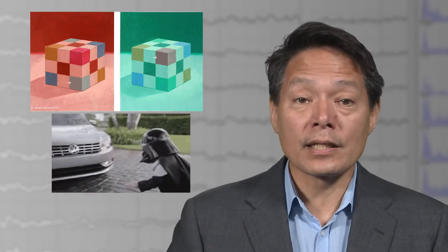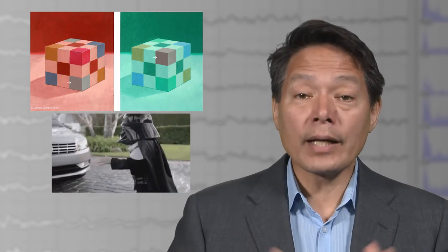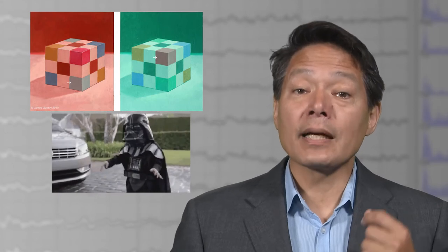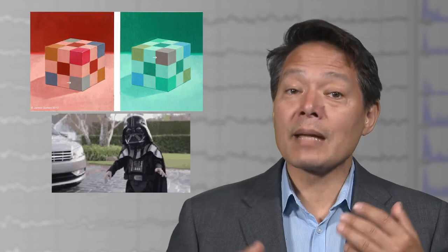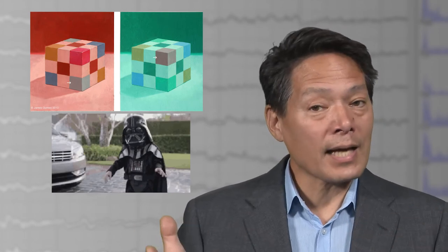One believes one caused something when one in fact did not. But just as the existence of visual illusions does not prove that all vision is an illusion, the existence of various illusions of willing does not prove that all willing is an illusion. In particular, Wegner's data suggests that people can have mistaken beliefs about their wills. But a belief about one's will is not the same as that which wills or intends to act.